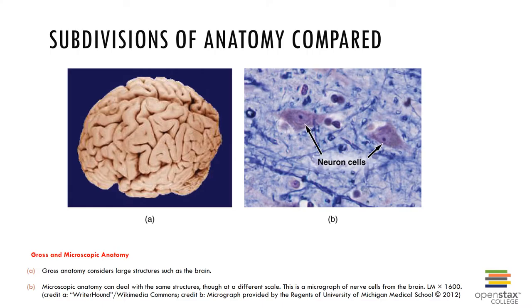Microscopic structures can't be seen with the naked eye, so we generally use a microscope. In lab, you'll be using a compound microscope to study certain histological structures, like different forms of epithelial tissue or connective tissue. In this example, we're looking at a neuron. You can see the neuron cells and even the little dark spot in the center of the cell, which is the nucleus. You'll be examining various organelles of the cell later on.